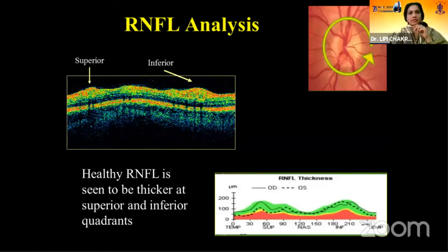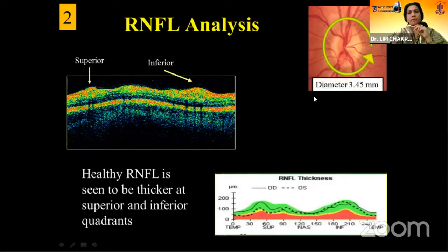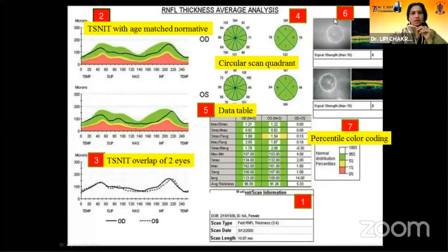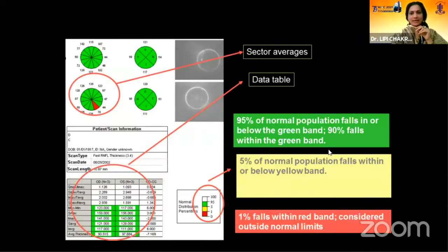The second component is RNFL analysis. We all know that healthy RNFL is thicker at superior and inferior quadrants. The diameter of 3.45 millimeters is the area around the optic nerve head where the RNFL analysis is done, and this has fallacies of its own. This is RNFL thickness average analysis across various zones. A second zone is TSNIT with age-matched normative data, third is TSNIT overlap of two eyes, fifth is data table, and seventh is percentile color coding.